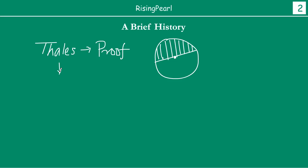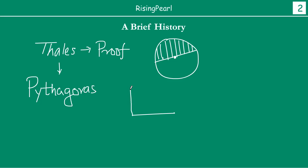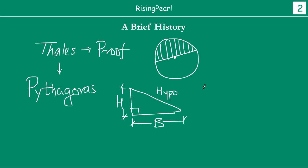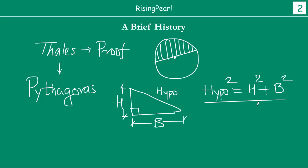So Thales was the first person who actually proved why this is true. Similarly, one of the very prominent followers of Thales was Pythagoras. Pythagoras came up with his famous theorem: for any right-angle triangle, if you have the 90-degree angle, the hypotenuse squared is equal to the sum of the squares of the other two sides — that is, height squared plus base squared. He said this is true for all right-angle triangles that you can think of.